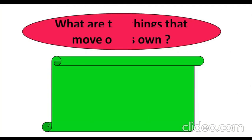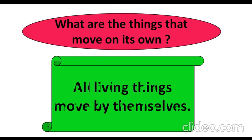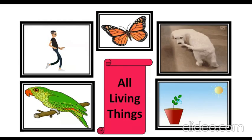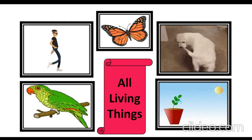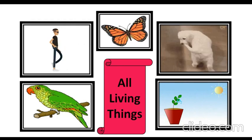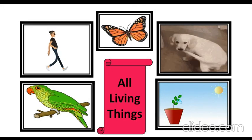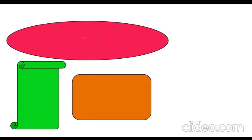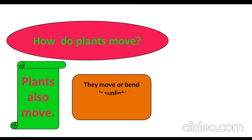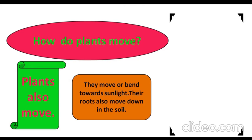Now tell me, students — what are the things that move on their own? Yes, all living things move by themselves — sabhi living things apne aap move kar sakti hain. We know very well what living things are: humans, animals, and plants are living things, and they all can move by themselves. Do you know, students, how plants move? Plants also move — they move or bend towards sunlight, and their roots also move downward into the soil.